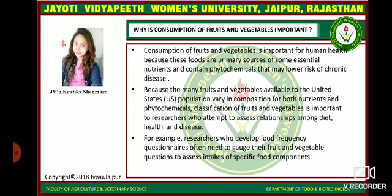Why is consumption of fruits and vegetables important? The consumption of fruits and vegetables is important for human health because these foods are a primary source of some essential nutrients and contain phytochemicals that may lower the risk of chronic diseases. Because many fruits and vegetables available to the US population vary in composition of both nutrients and phytochemicals, classification is important to researchers who attempt to assess relationships among diet, health, and disease. For example, researchers who develop food frequency questionnaires often need to gauge their fruits and vegetables questions to assess intake of specific food components.